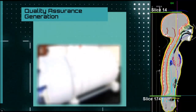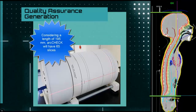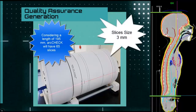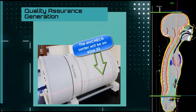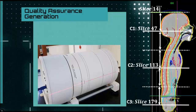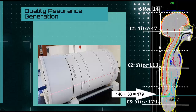Now let's head on with our arc check. It has a length measurement of around 200 mm. For this presentation, we'll consider the length of 195 mm. If we divide this amount by the width of the slice, which is 3 mm, we find the arc check would require 65 slices. Not only that, but the center of our arc check will be on slice 33. With this, we know the initial slice will be adding 33 tomograph slices to determine the position of our arc check. We have to locate at what tomograph slice would be each and every center. In our example, we'll have three centers on tomograph slices 47, 113, and 179.